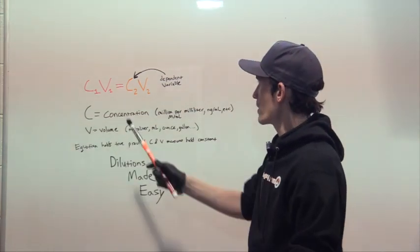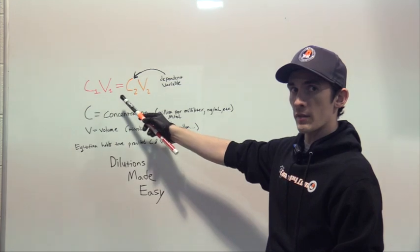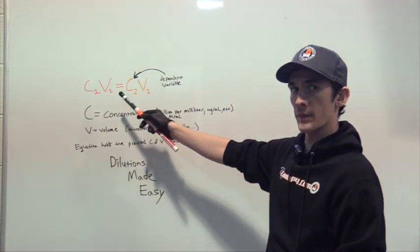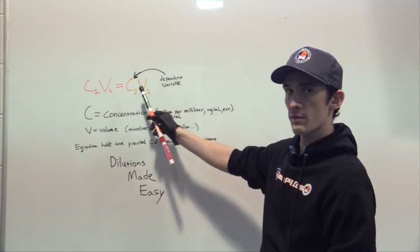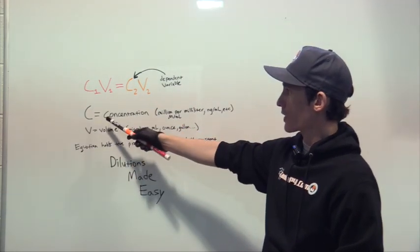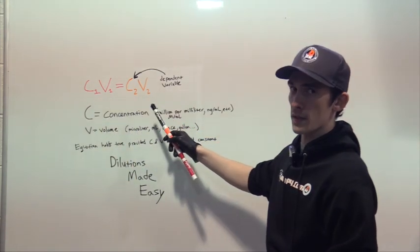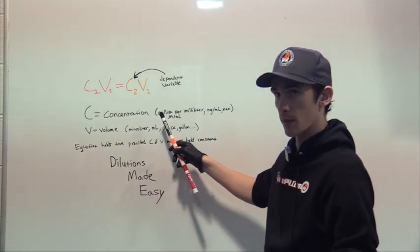The equation we have here is the general and universal dilution equation. So we have C1V1 equals C2V2, where C stands for concentration.